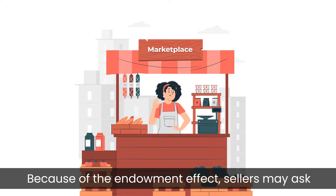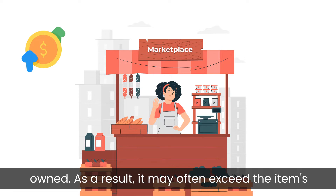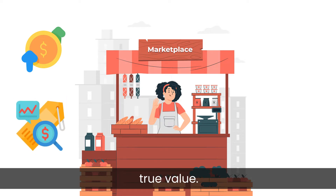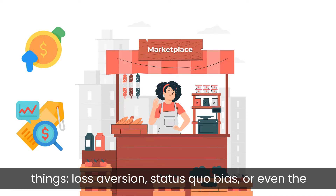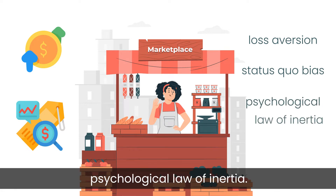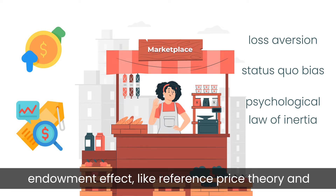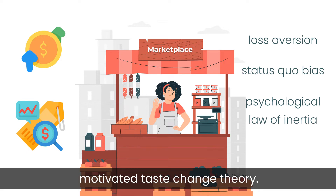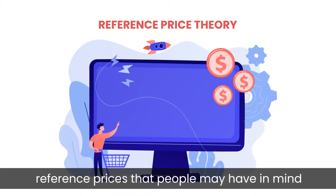Because of the endowment effect, sellers may ask for a higher price for items they have used and owned. As a result, it may often exceed the item's true value. The endowment effect can be caused by three things: loss aversion, status quo bias, or even the psychological law of inertia. Researchers also use other theories to define the endowment effect, like the reference price theory and the motivated taste change theory.